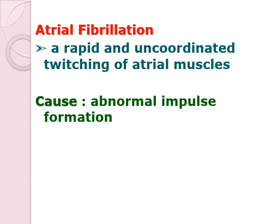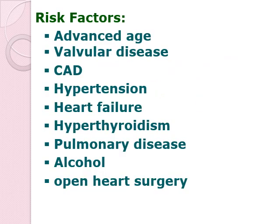The next problem is atrial fibrillation. In atrial fibrillation, there is rapid, uncoordinated twitching of atrial muscles. The key words are rapid and uncoordinated. The cause is abnormal impulse formation. Risk factors would include advanced age — because as your patient ages, there is damage already on the conduction system — valvular disease especially damage to your tricuspid valve, coronary artery disease, hypertension, heart failure, hyperthyroidism, pulmonary disease, alcohol, and even open heart surgery.